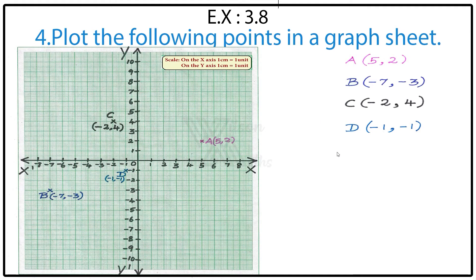Next, Point D: (-1, -1). The X axis is the horizontal line — go to minus 1. The Y axis is the vertical line — go to minus 1, which means come down from the X axis and to the left from the Y axis. Where both lines meet is Point D at (-1, -1).